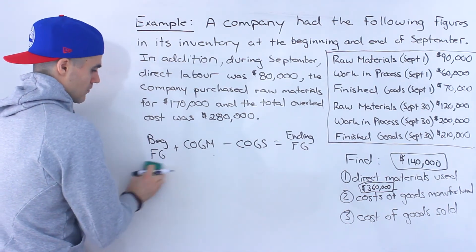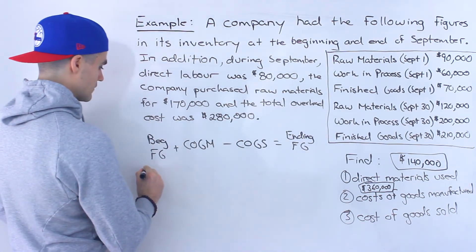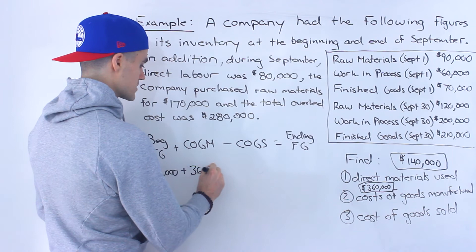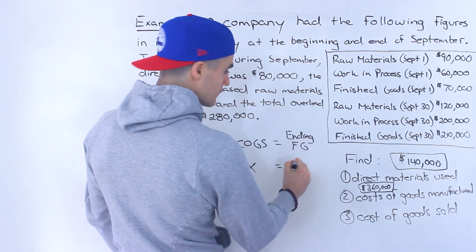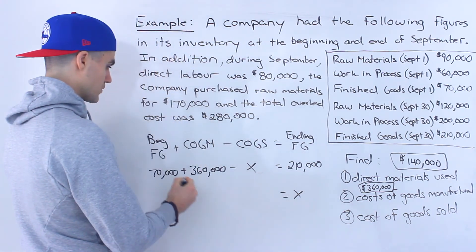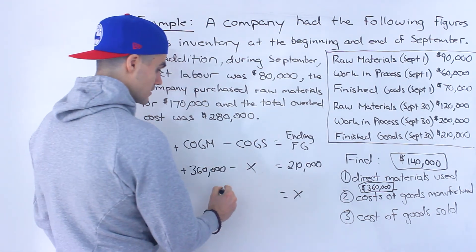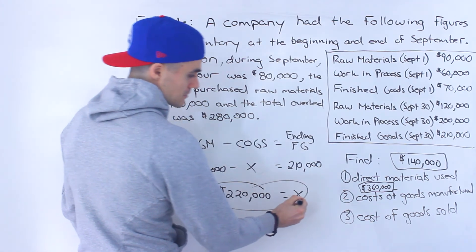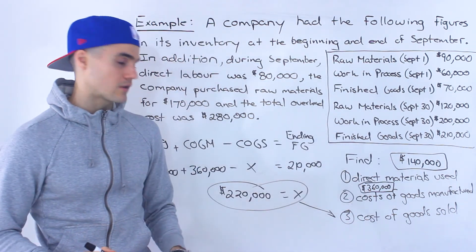Solving for cost of goods sold: beginning finished goods is $70,000, cost of goods manufactured from number two is $360,000, and we subtract X (cost of goods sold), leaving ending finished goods of $210,000. So $70,000 plus $360,000 gives us $430,000, minus $210,000 gives us $220,000. That's the answer for number three — cost of goods sold is $220,000.